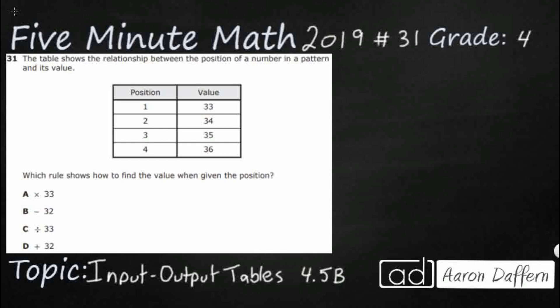So we have just four numbers in our position here, and that's going to act as our input. We're looking for the relationship between the position and its value. This value is going to act as our output, which means we're looking side to side for which rule — that's what we're missing. We have a complete input-output table, and all we need is the rule.